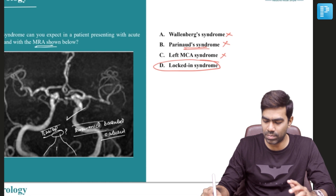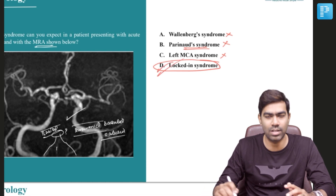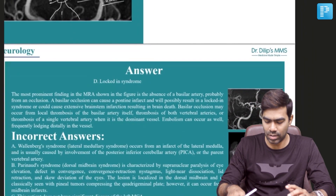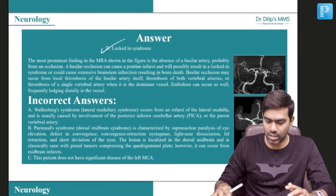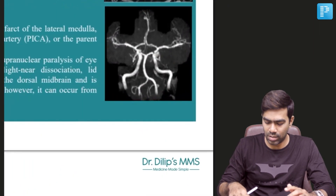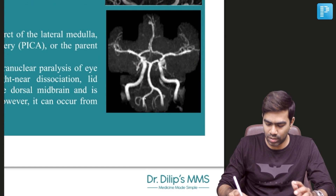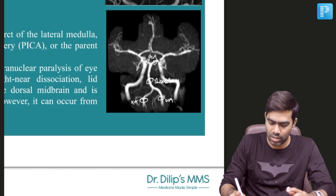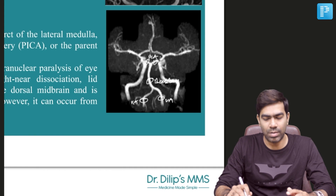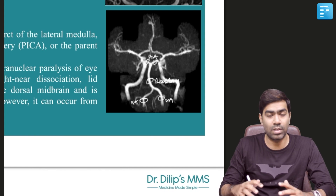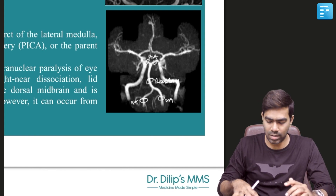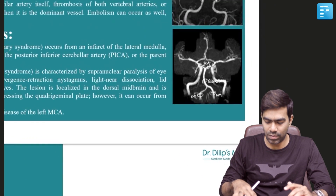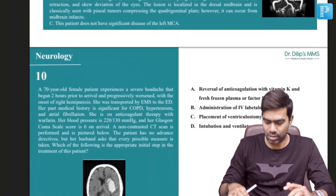So it's a mid basilar or proximal basilar occlusion resulting in Locked-in syndrome. The right answer for this question is option D. Look at the normal angiographic picture — this is how it should look: two vertebral arteries uniting to form the basilar artery, and two posterior cerebral arteries bifurcating from the basilar artery. That's the normal angiographic picture of the posterior circulation.